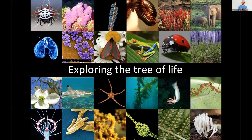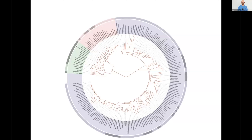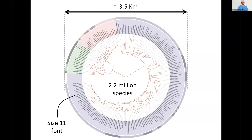How can we explore this remarkable tree and make it accessible to everyone as a public good? Until recently, a typical way of viewing part of the Tree of Life would have been something like this, which is not so accessible other than to experts. To fit all 2.2 million known species with size 11 font would need something about three and a half kilometres wide.